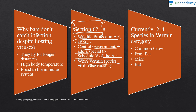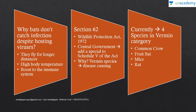Vermin species are those species that can cause diseases or spread disease in humans. You know Schedule 1 etc. is about protected species which we want to save — tiger, dolphin, etc. But under the Wildlife Protection Act 1972, Schedule 5 is the vermin species list. The central government has the power under Section 62 that when they think a particular species is spreading disease, they can put it in Schedule 5 and declare it a vermin species.